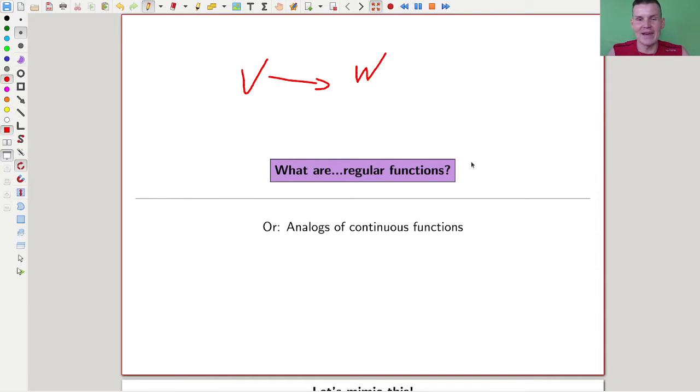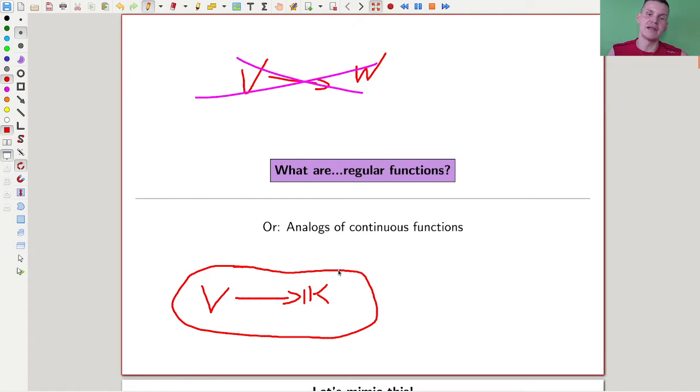But we are not quite there yet. Let's start with an easier problem. We can replace W by a much easier thing. We can go to the ground field, which is of course a variety, just a very boring one. This plays a role of something like a dual map in linear algebra. These are usually called regular functions, and they play an important role.